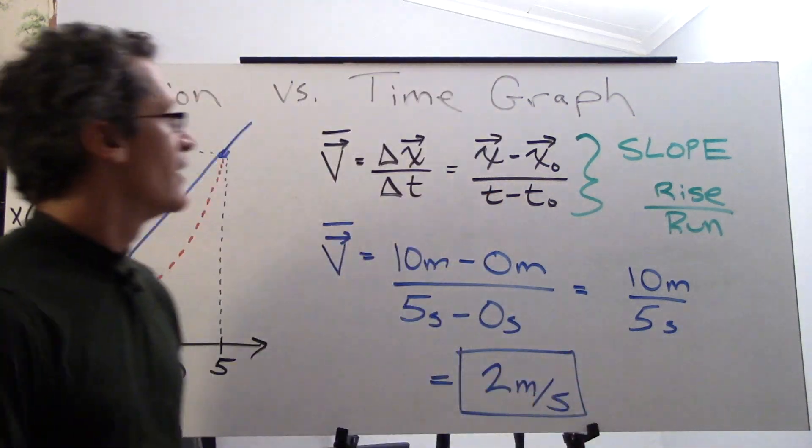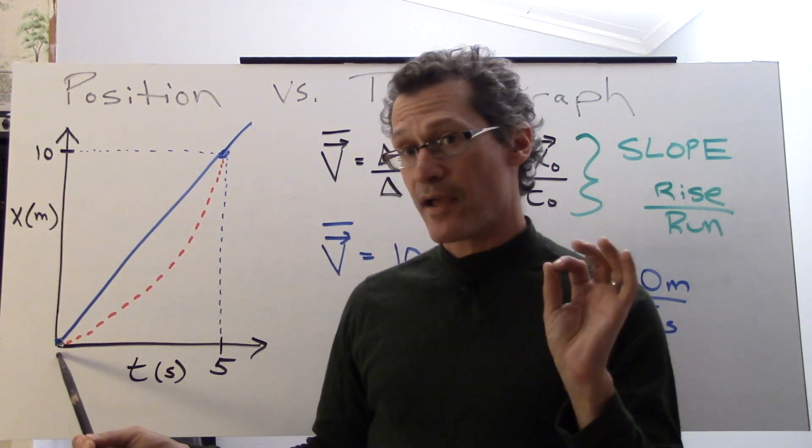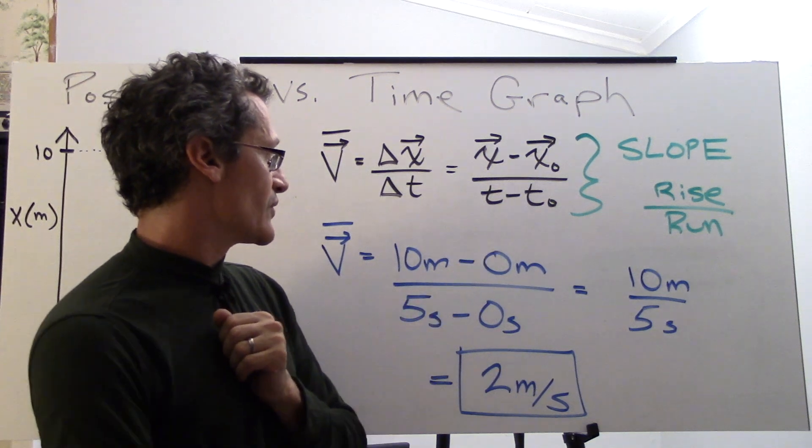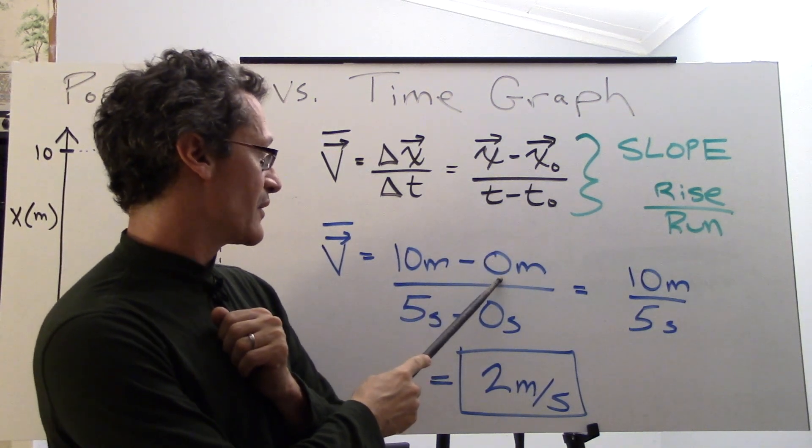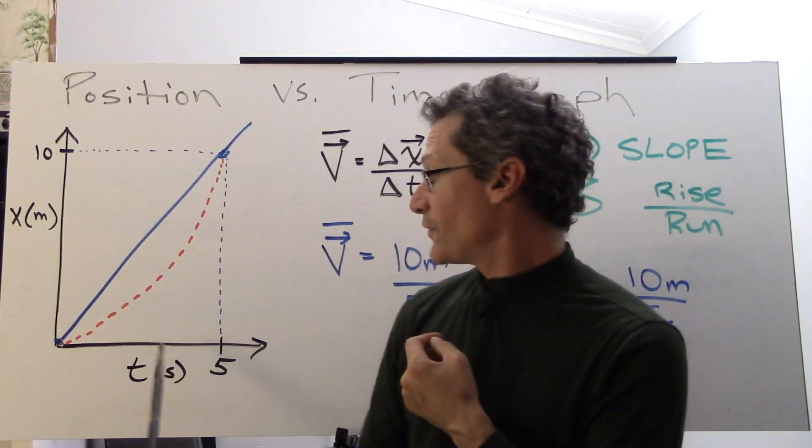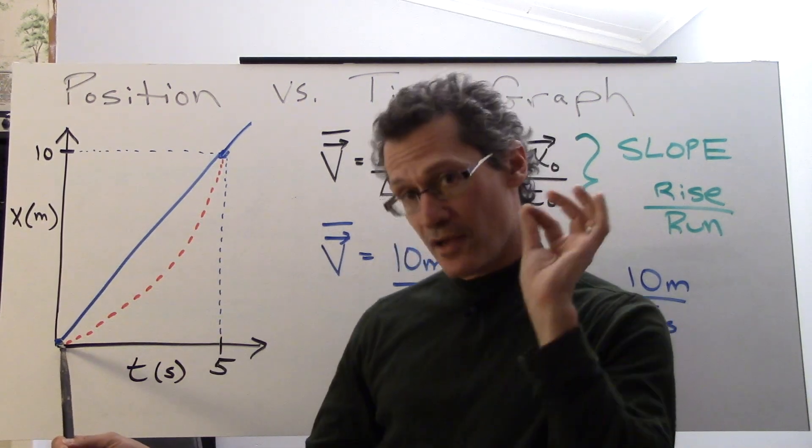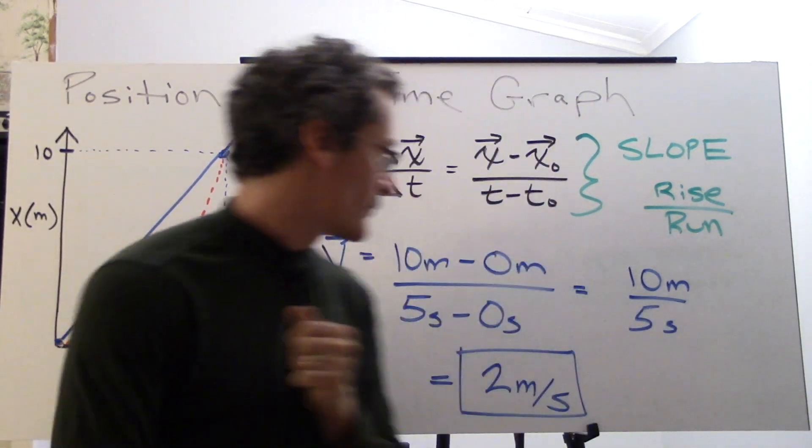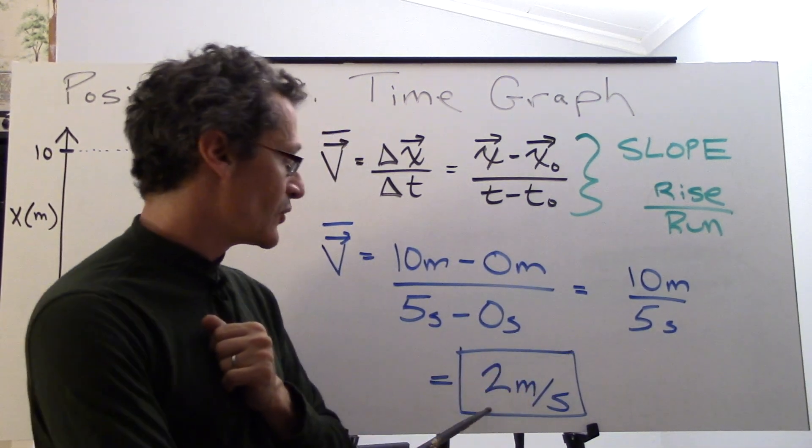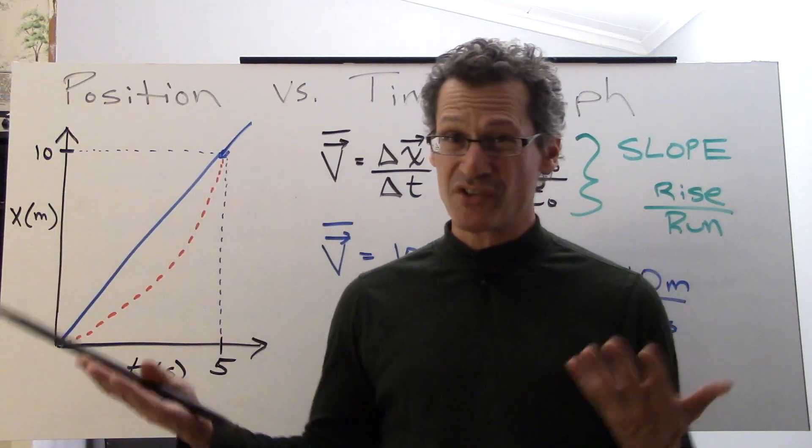So let's check it out. x is 10 meters, that's where we end up and our x naught, this value over here, is where we began during this interval and that was at the origin so 0 meters. So 10 minus 0 is 10. The time interval was from 0 to 5 seconds so we end at 5 seconds and our initial time, original time, was 0. So we have 5 seconds minus 0 seconds or 5 seconds. 10 divided by 5 is 2. The value of this slope is 2 meters per second.